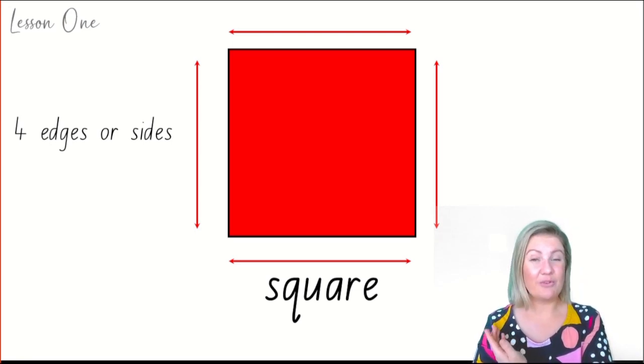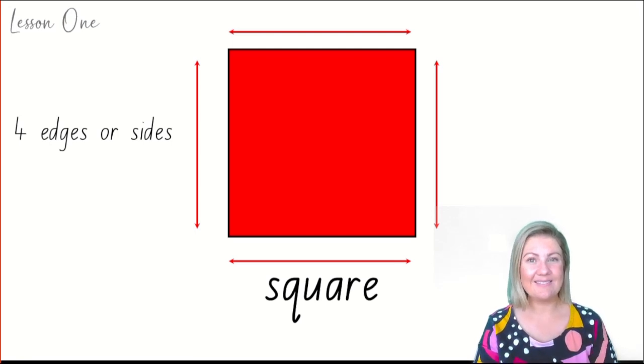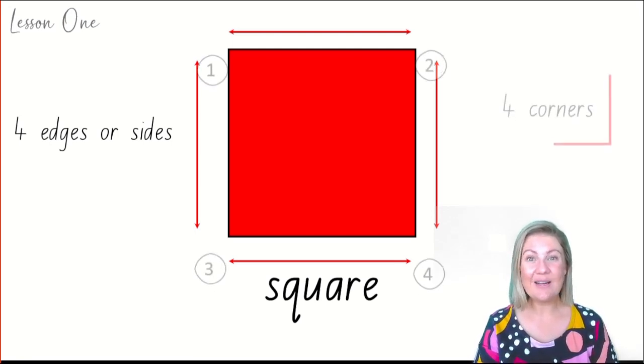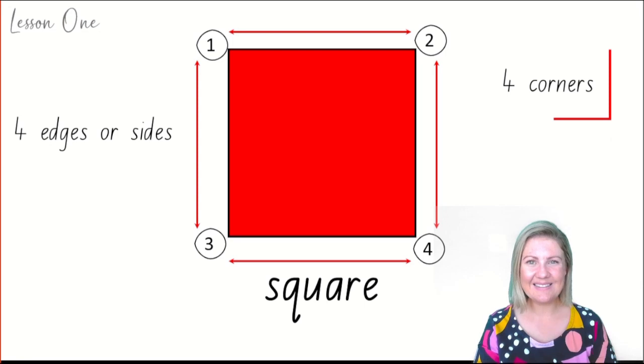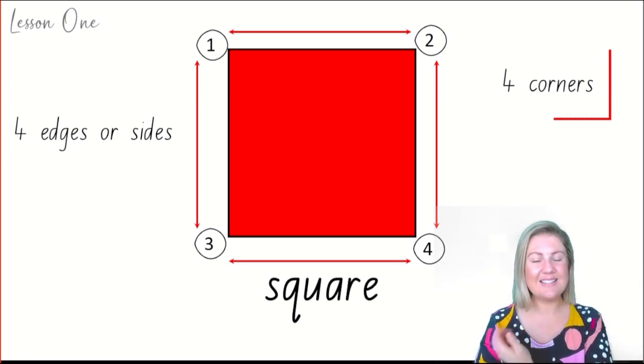Well, there are four sides on a square. And guess what? There are four corners. Can you see the four corners on this square? One, two, three, four. A square has four sides and four corners.